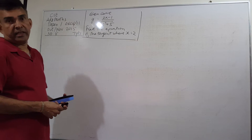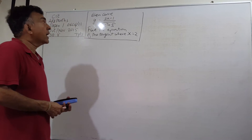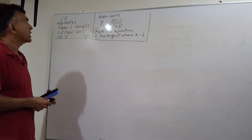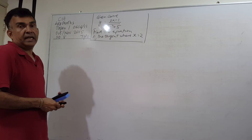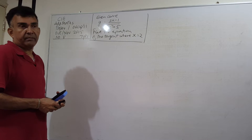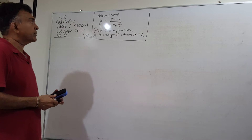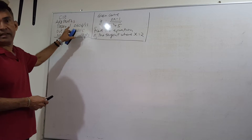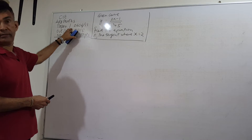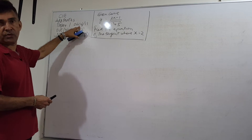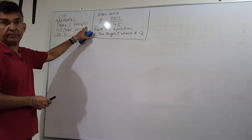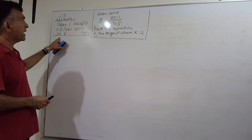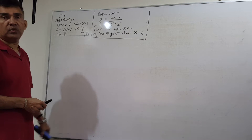Hi, welcome to medcenter.com. In this video we are going to be looking at a question that appeared on the recent CIE Additional Maths exam, October/November 2015, CIE Additional Maths paper 1, subject code 0606/11. The question is question number 8 and it gives you 7 marks.